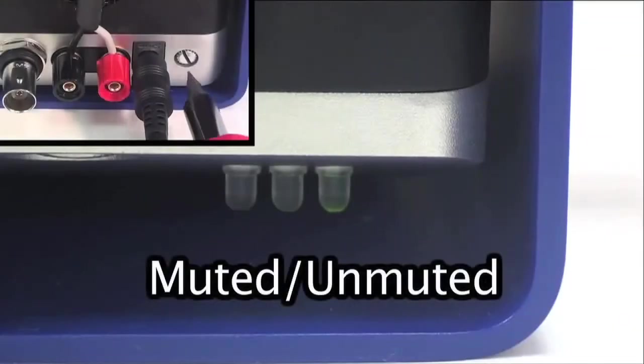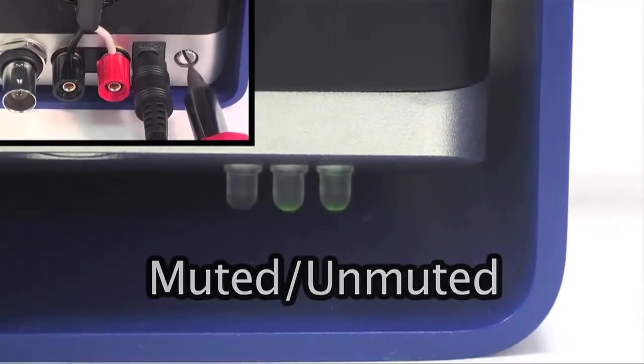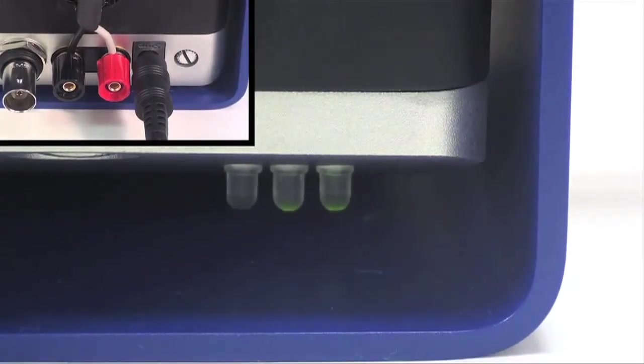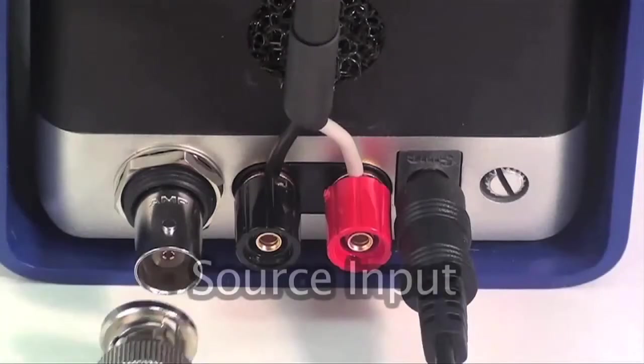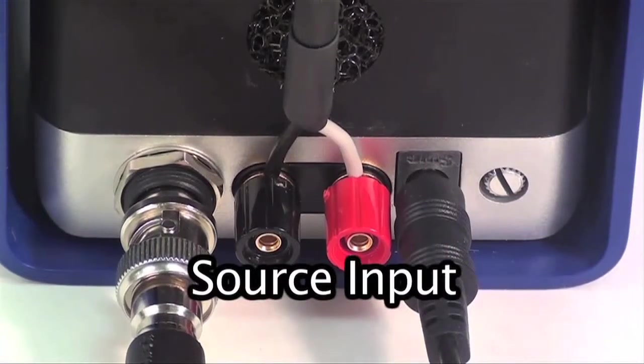To turn the amplifier on or off, use a small screwdriver and press the on/off gain knob one time. Press the knob once again to bring the amplifier back to mute or standby position.